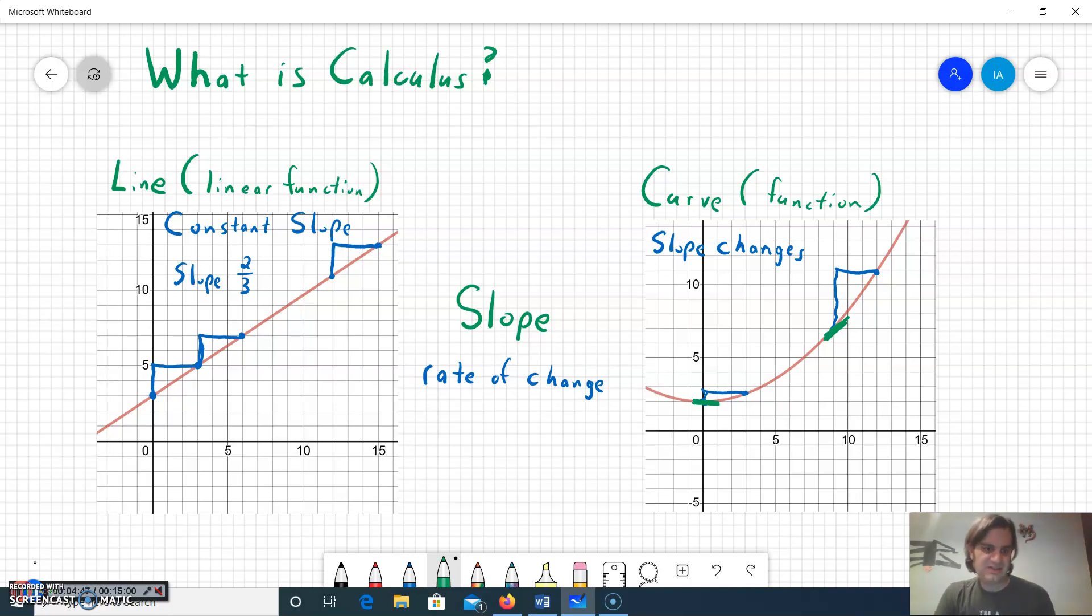Because how things change can let us make decisions or predict models, and all graphs are our models of data. So we can use calculus to figure out the exact slope or the exact rate of change on curves.